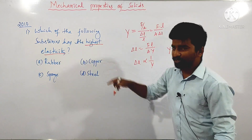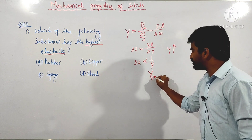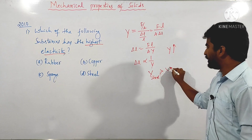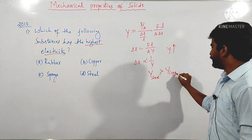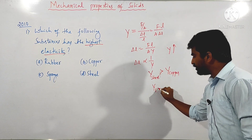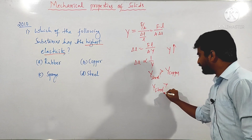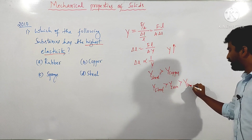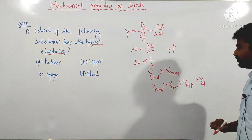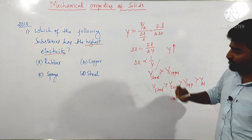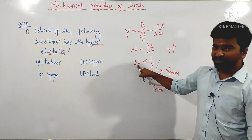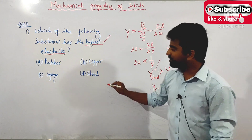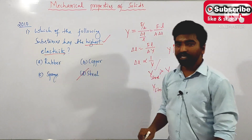Among the four options, Young's modulus of steel is greater than that of copper, iron, and aluminium. So Young's modulus is highest for steel, meaning it has the least extension — which means it is the most elastic. So the answer for the question is option D. Thank you.